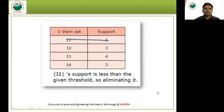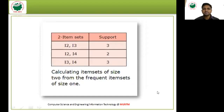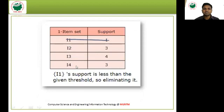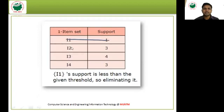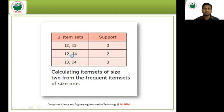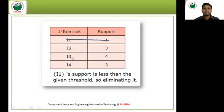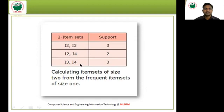In the next step, we calculate item sets of size 2 from the frequent item sets of size 1. The candidate pairs are {I2, I3}, {I2, I4}, and {I3, I4} — these are unique combinations. Going through the transactional database, {I2, I3} has support 3, {I2, I4} has support 2, and {I3, I4} has support 3.